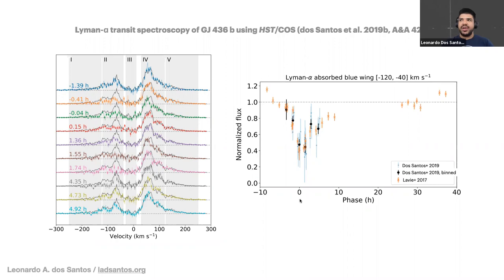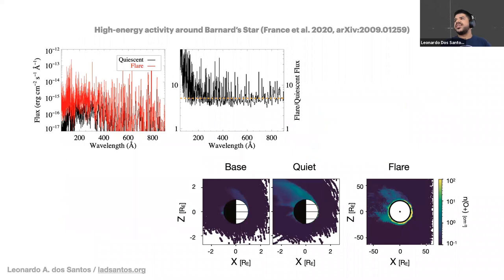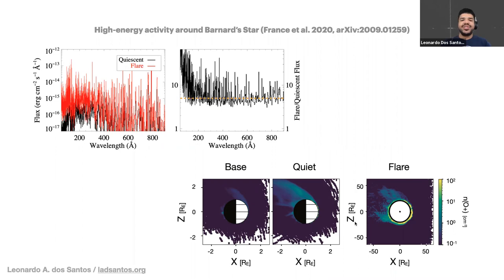These results yield not only atmospheric information but also information about the high-energy environment around the planet. There's a very recent cool study published by Kevin France and collaborators observing Barnard's star, which was recently discovered to have a rocky planet orbiting it. During five Hubble orbits, they measured two flares and inferred the UV spectrum of the star at both quiescent and flare state. They simulated atmospheric escape in the rocky planet at both states, and one conclusion is that even at today's activity level of Barnard's star — a 10-billion-year-old star — the planet would still be able to retain a secondary atmosphere.